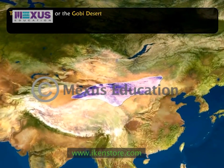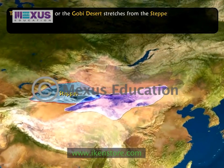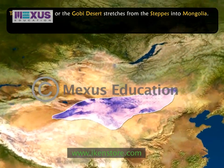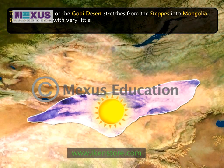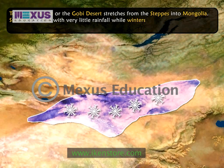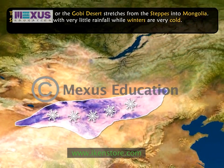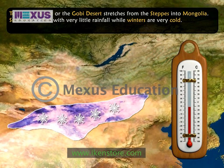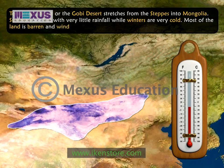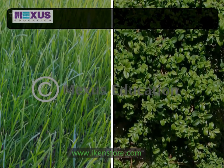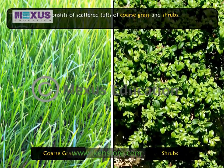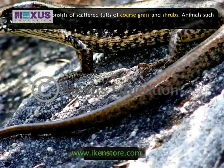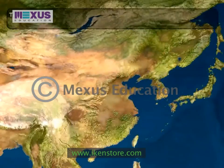The temperate desert, or the Gobi Desert, stretches from the steppes into Mongolia and covers the plateau of Mongolia. Summers are hot with very little rainfall, while winters are very cold and the temperature remains below freezing for several months. Most of the land is barren and windswept. The vegetation consists of scattered tufts of coarse grass and shrubs. Rodents, lizards, and small insects are found here.